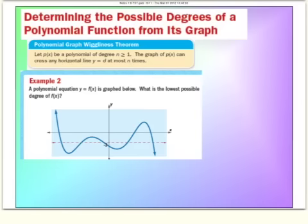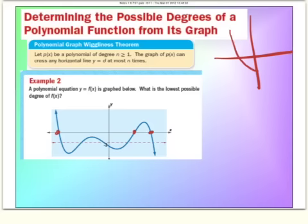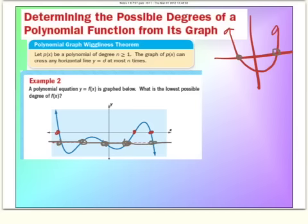Objective 21 is to determine the degree of a polynomial function from a graph, using the Wiglanness Theorem: the graph of polynomial p of degree n or higher can cross any horizontal line at most n times. Looking at a graph that crosses the x-axis only three times, you might think it's a third-degree polynomial. But you need to find the horizontal line that crosses the most points. Drawing a dotted line that crosses five points tells you this is a 5th-degree polynomial.